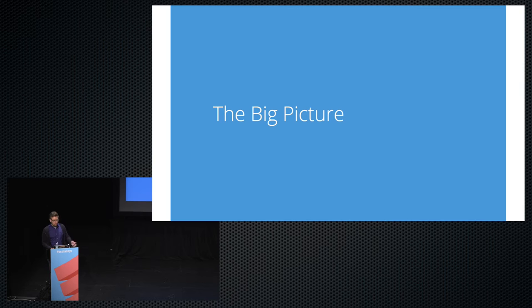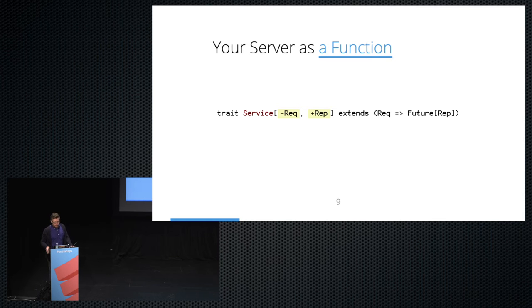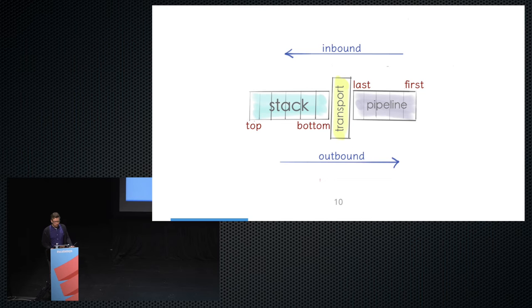Before talking about clients and servers, let's cover the big picture. Finagle is designed around a simple idea: your server is a function — a function from a request to a future response. You can talk to your server by calling that function, and define your server by implementing it. Because the request and response types are generic, the server is abstracted over the protocol it uses, which means you can define generic functionality like retries and load balancing and share it across different protocol implementations.